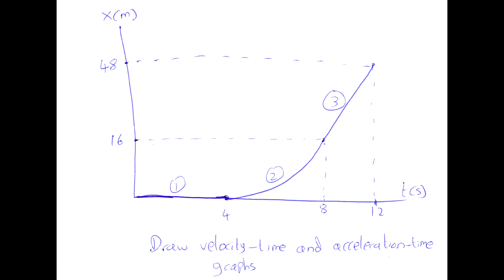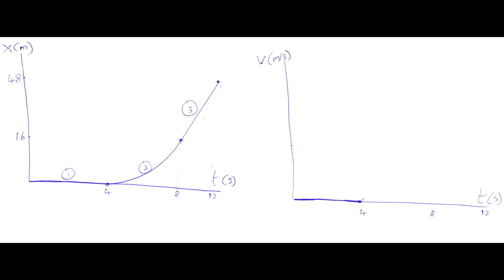Here's an example of a displacement-time graph where we're asked to draw a velocity-time graph and an acceleration-time graph. Notice this is exactly the same graph we used in the stoplight example, but now we're going to use the finding-the-slope method. Section one of the graph is a flat line. Since it's flat, its slope is zero — a flat line always has a slope of zero. If its slope is zero, that means its velocity is also zero. So for these first four seconds, we can draw a velocity of zero on the velocity-time graph.